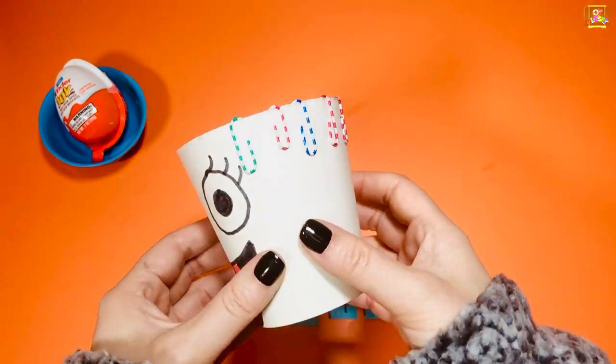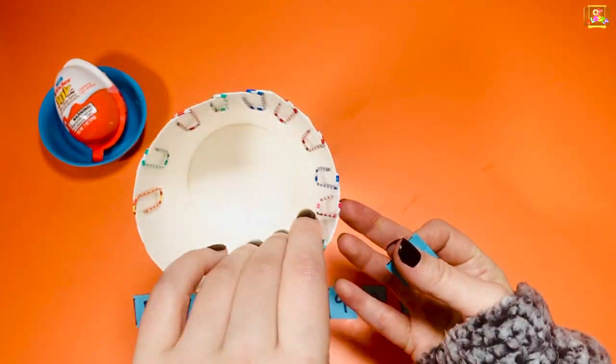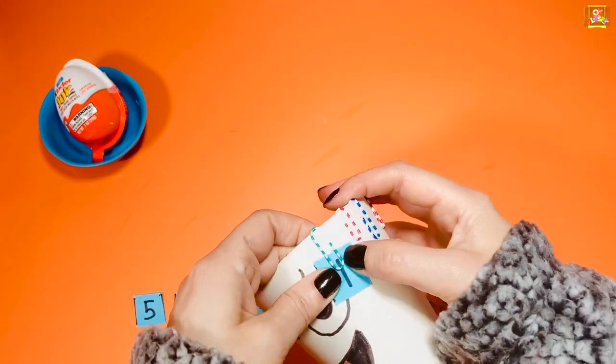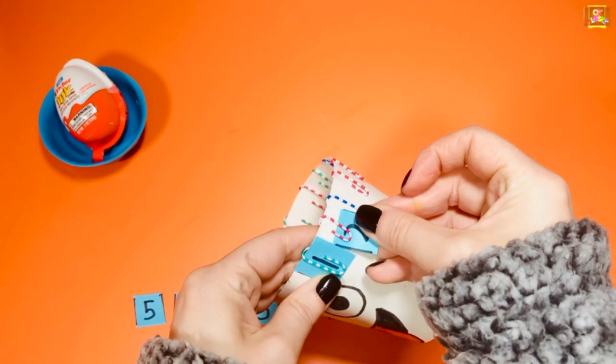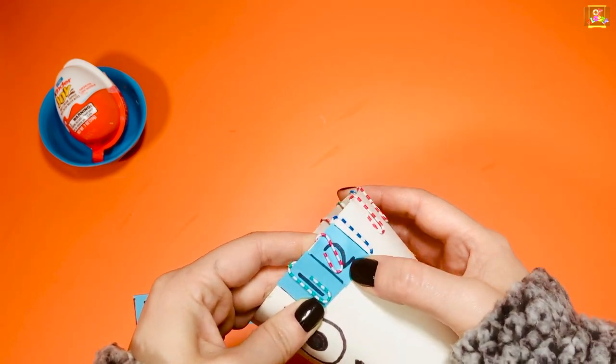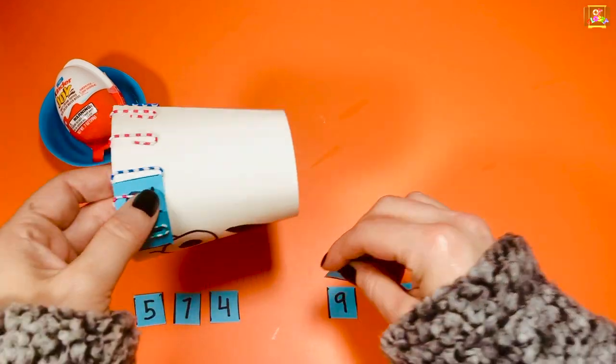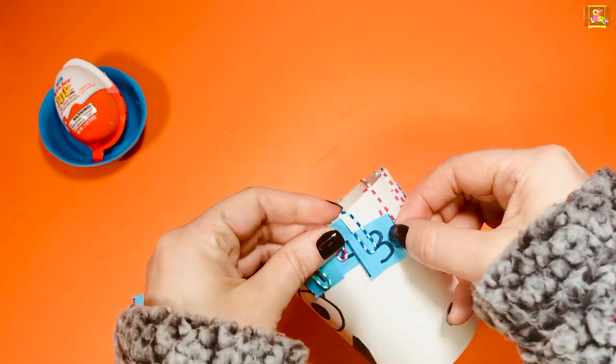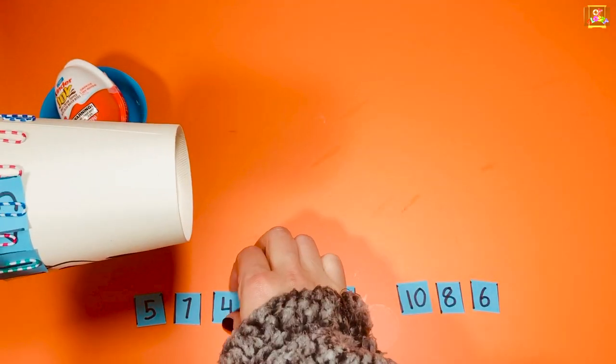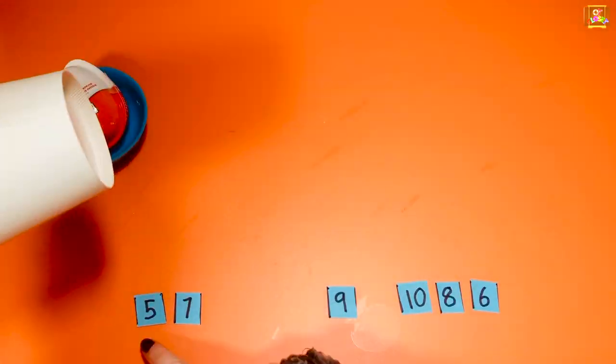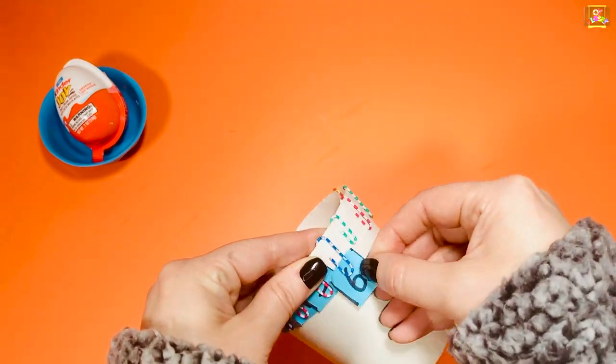Now, let's start our number game. First number is number 1. Find it. Next comes 2, then 3, then 4, 5, then it's 6. Can you count by yourself now?